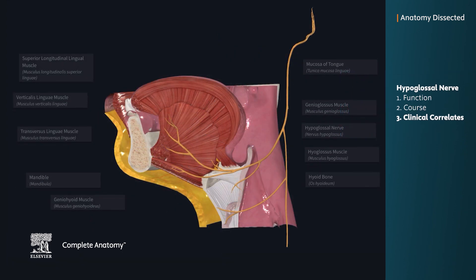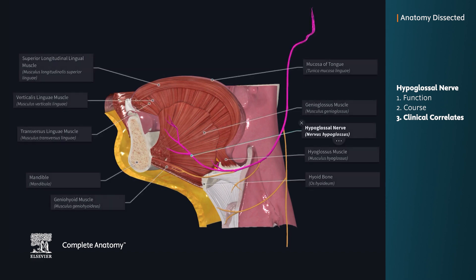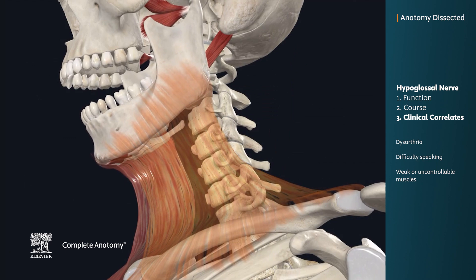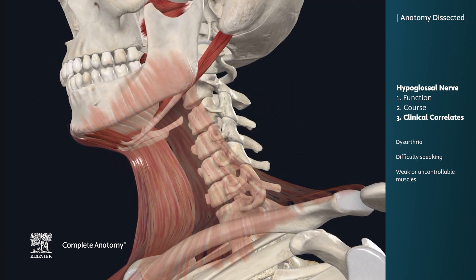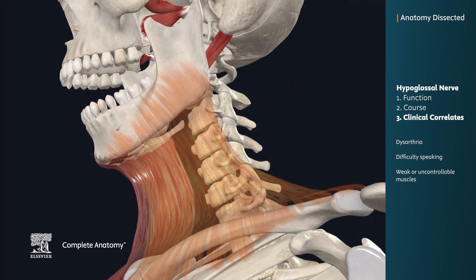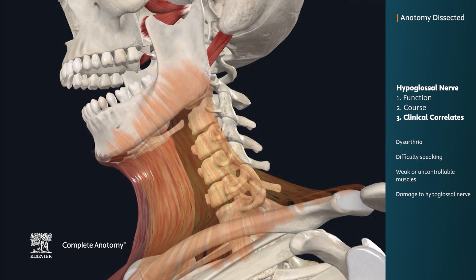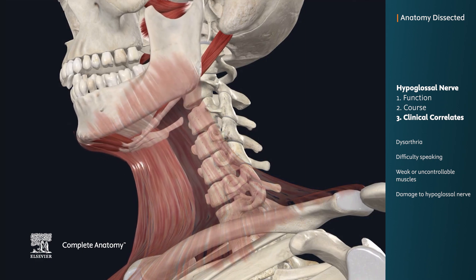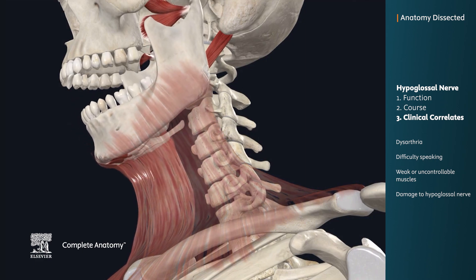Dysarthria and obstructive sleep apnea are two conditions related to the hypoglossal nerve. Dysarthria is when one has difficulty speaking due to weak or uncontrollable muscles used for speech. This can be caused by nerve damage of the hypoglossal nerve, which supplies the motor innervation for most of these muscles.